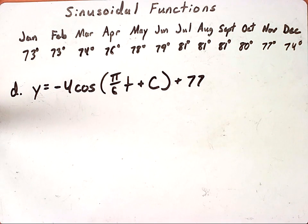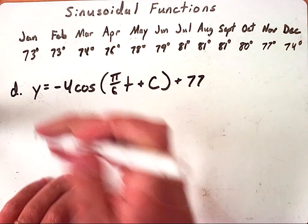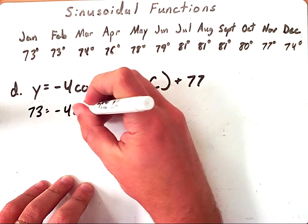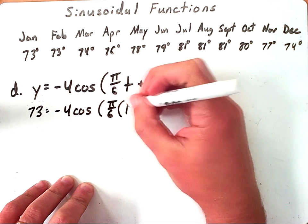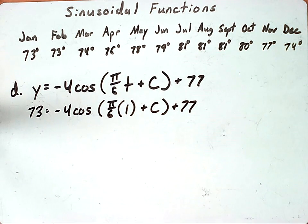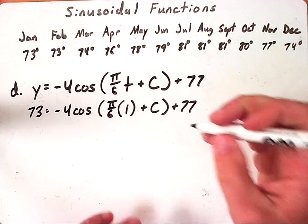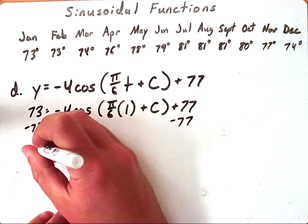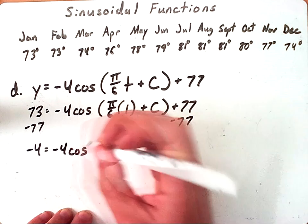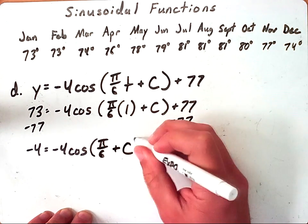Looking at this I have most of my equation filled in, really all I'm lacking is C. Currently I can't solve for C - there's three variables in the problem, that's just too much for us to work with. However I do know that if I plugged in let's say 1, which would represent January, that Y would equal 73. So if I plug this in, I now have only C as my variable and I can solve for C. I would subtract 77 from both sides first which will leave me with negative 4 equals negative 4 cosine π over 6 times 1, which is just going to leave us with π over 6 plus C.